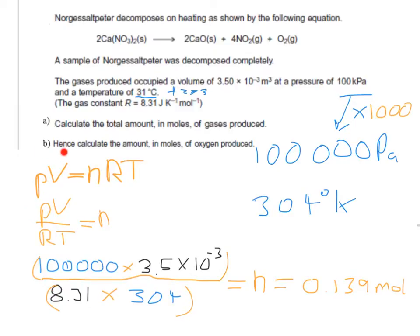The next part of the question says, hence, calculate the amount in moles of oxygen produced. So this is the amount in moles of gases produced. How many gases have we got? We've got the nitrogen dioxide and the oxygen. So if we want to calculate moles of oxygen, we need to look at the ratio between the total gases and the amount of oxygen.